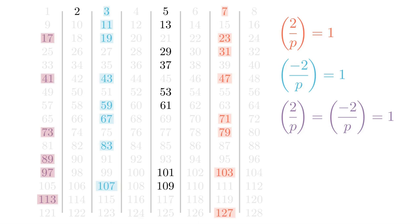There's still a column of primes where (-2/p) and (2/p) are both -1. But in that case, the multiplicativity tells us that (-1/p) must be equal to 1.